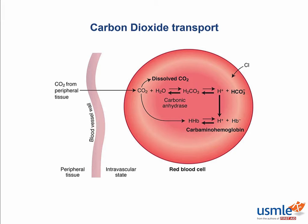Carbon dioxide is transported from tissues to the lungs in three forms. The majority of CO2 enters the RBC and is converted to carbonic acid by carbonic anhydrase. The hydrogen ion dissociates, and what are you left with? Bicarbonate. The remainder is either bound to hemoglobin as carbaminohemoglobin, or as dissolved CO2.